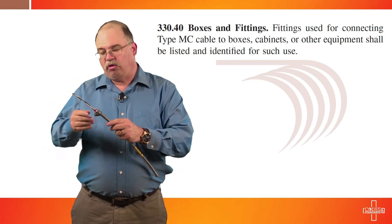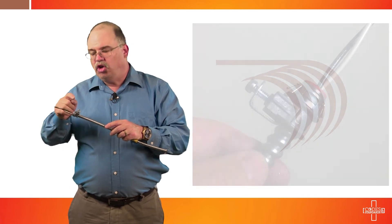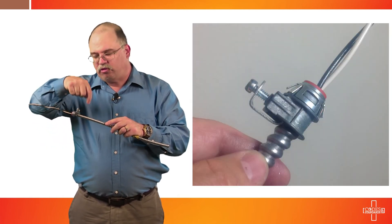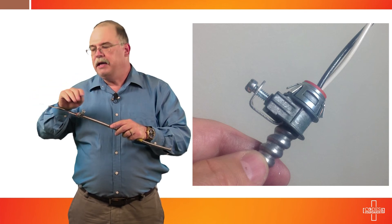Now, once you do that, you'll also notice that this has a saddle back design. Since the product we're dealing with here today is a smart ground and has an aluminum jacket, then you want to use a saddle back type fitting. You don't want to use a set screw type. Because if you tighten the set screws tight, the screw will penetrate through the aluminum and potentially damage the interior conductors.